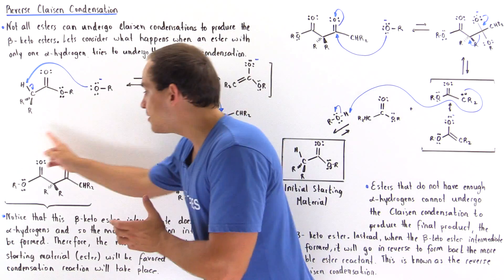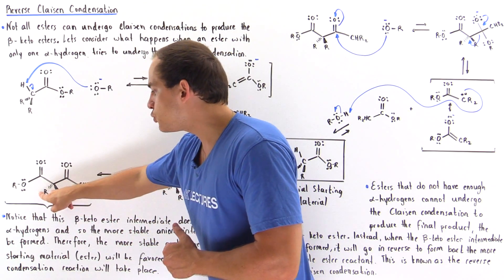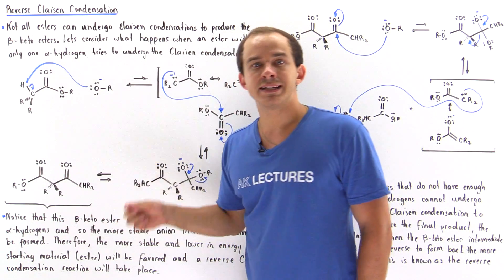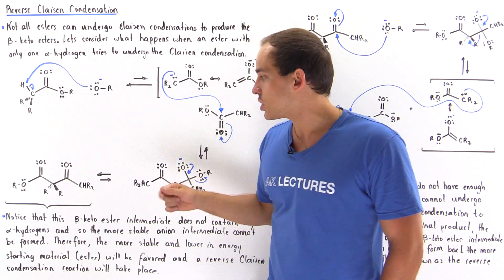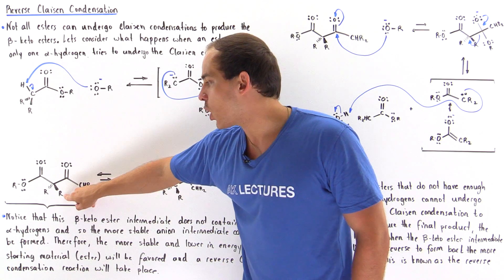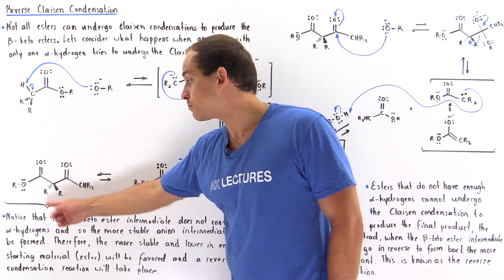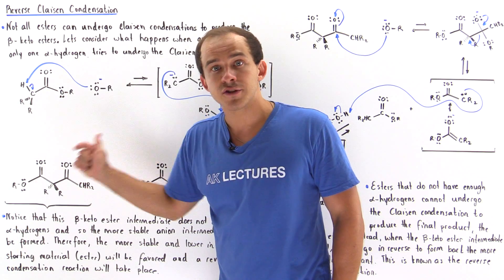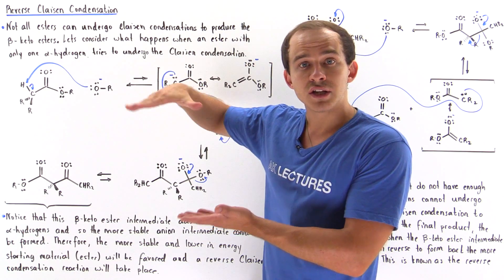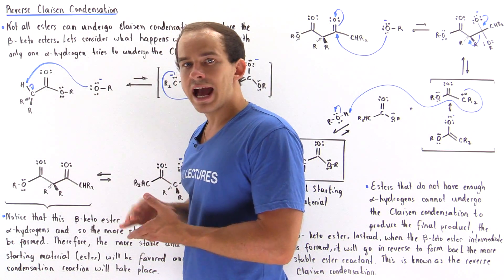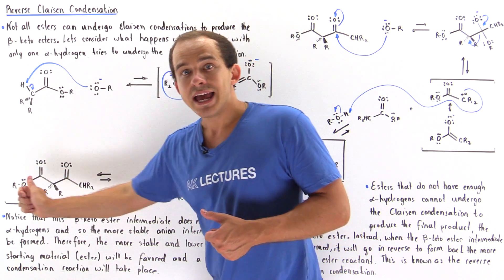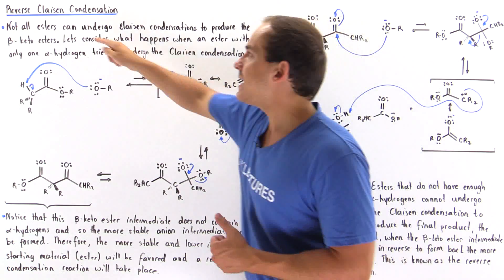However, in this reaction, notice that the intermediate has two R groups and no longer has any alpha hydrogens. Therefore, this intermediate cannot undergo the fourth step, in which the alkoxide base deprotonates the alpha carbon. Because we cannot deprotonate it, the final two steps cannot take place. This intermediate is higher in energy and less stable than the initial reactants, so the reaction can only go back in reverse.